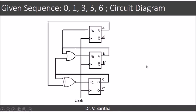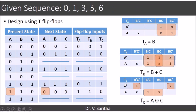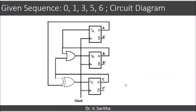So using those expressions for TA as B, TB as B plus C, TC as A XNOR C, we can construct the circuit like this.